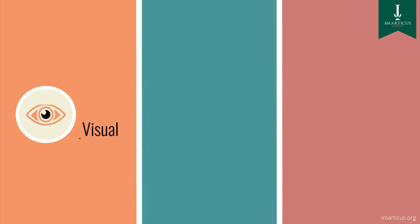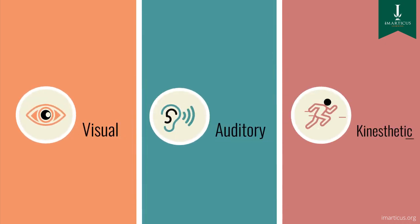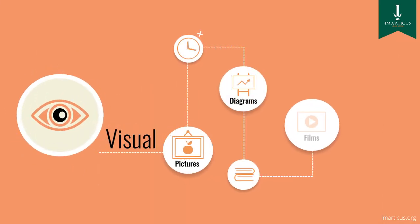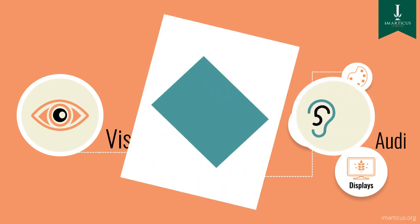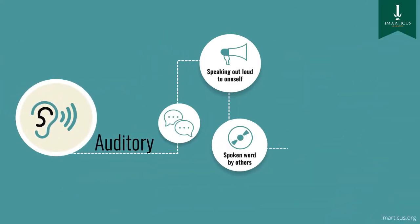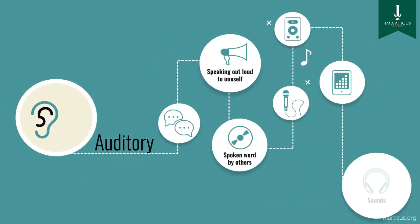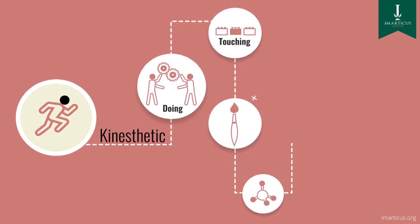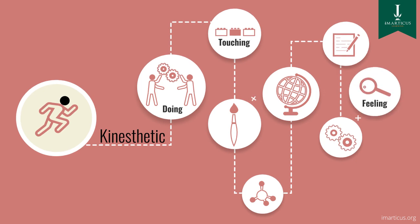Visual learners learn best from pictures, diagrams, films, and other visual media. Auditory learners use the spoken word to imbibe new knowledge. Kinesthetic learners prefer education through practical hands-on experiences. These are the ones who don't go by the manual.